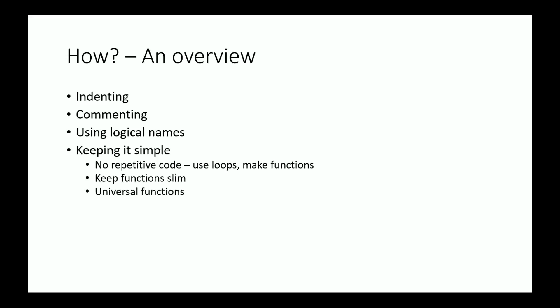So how can this be achieved? Here I will give you an overview and I will follow with examples shortly. So you should try to indent your code, you should comment your code well, you should try to use logical names on all variables and functions, you should try to keep things simple, don't repeat code, use loops and make functions instead, and try to keep your functions as slim as possible. And you should also try to make the functions universal. And you should try to anticipate and solve errors while you're coding and you should always code in small segments. And of course you should know when to deviate from these rules. And now I will give you some examples of these concepts.